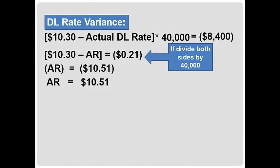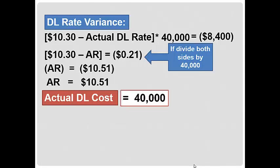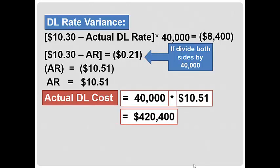Now of course that's not what the question asked us to compute. It asked us to compute the actual direct labor cost. We were given that 40,000 hours were actually worked, and we've computed that the actual direct labor rate was $10.51. So when we do our math, we find that the actual direct labor cost is $420,400.